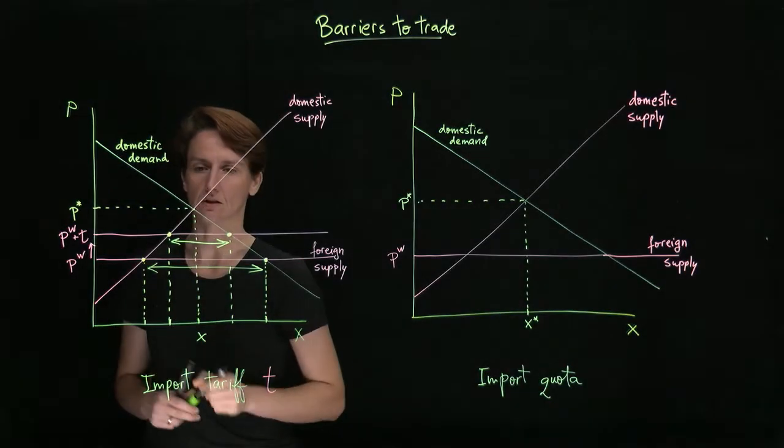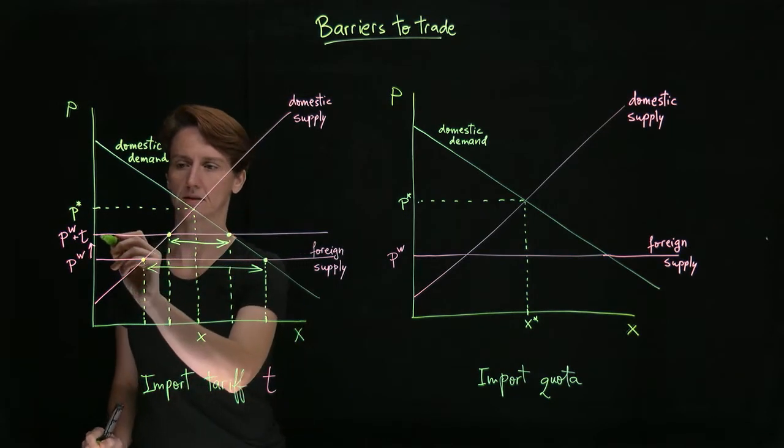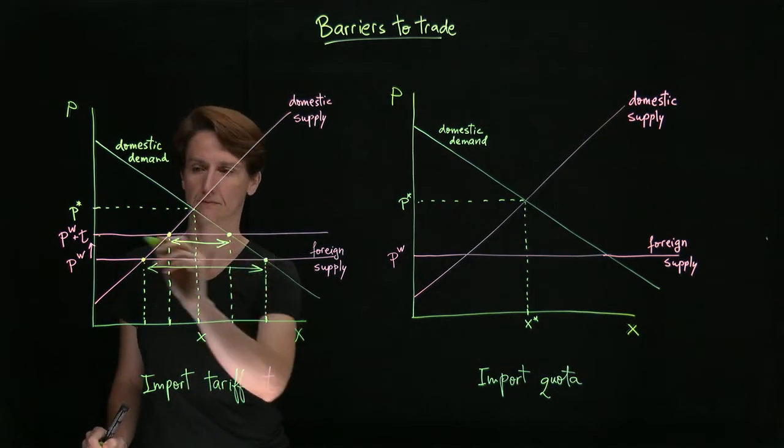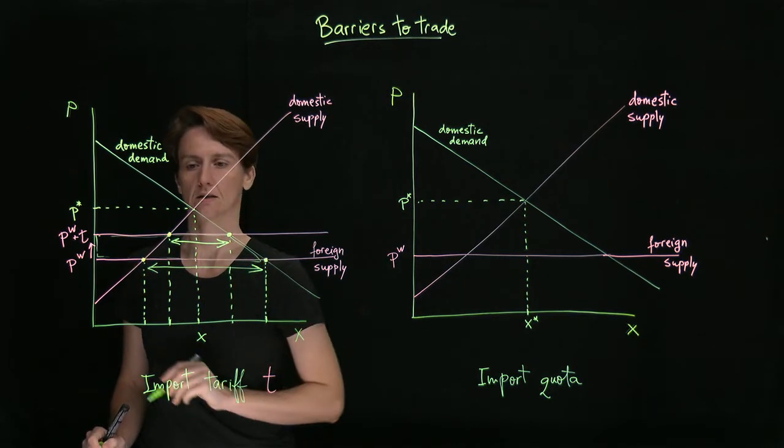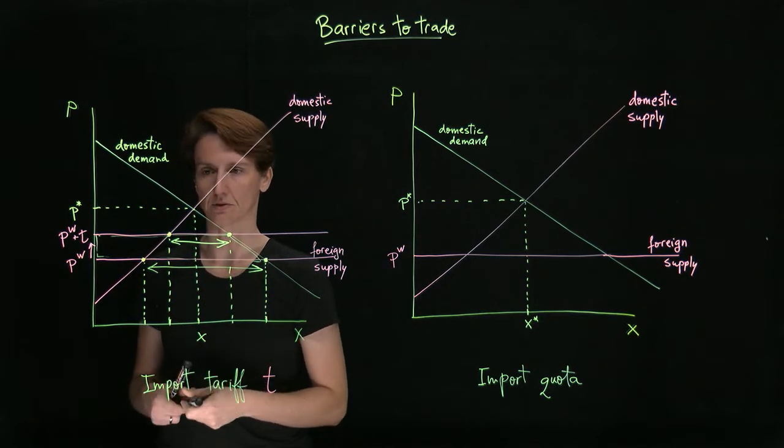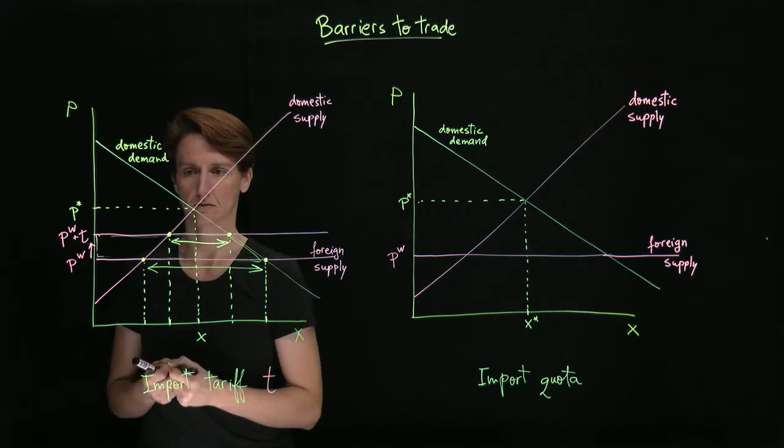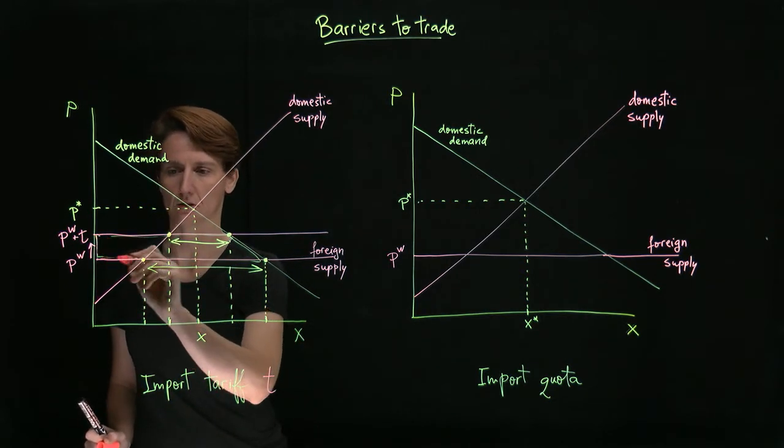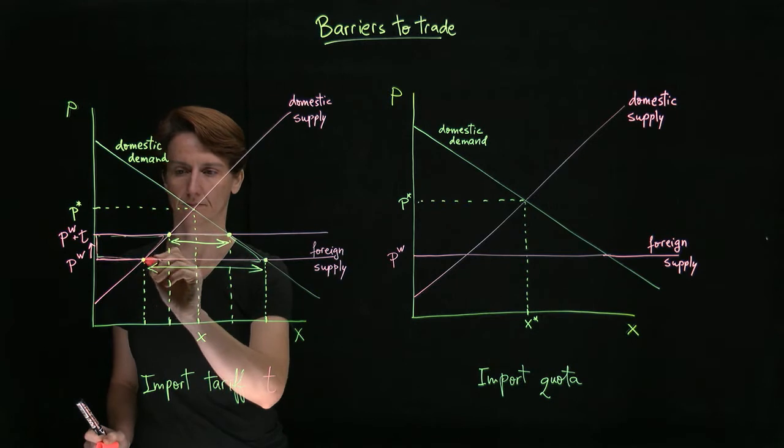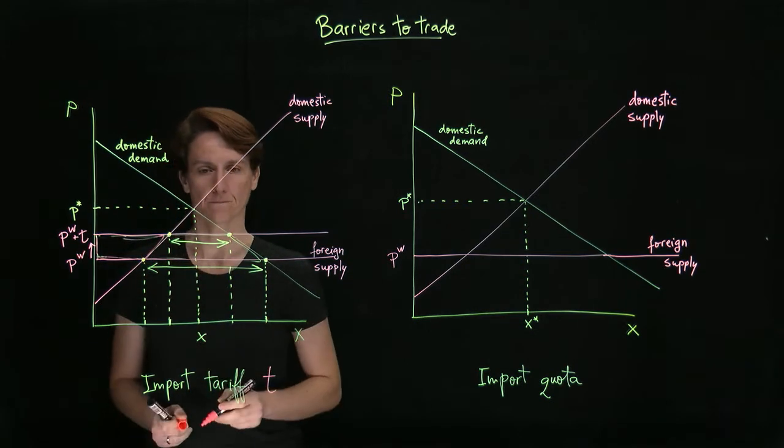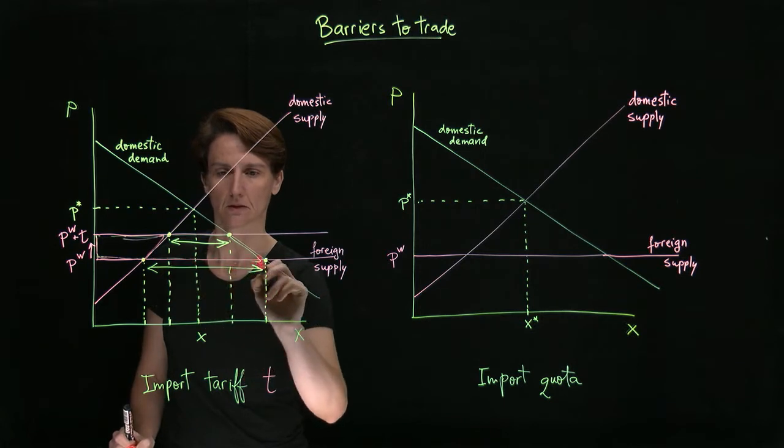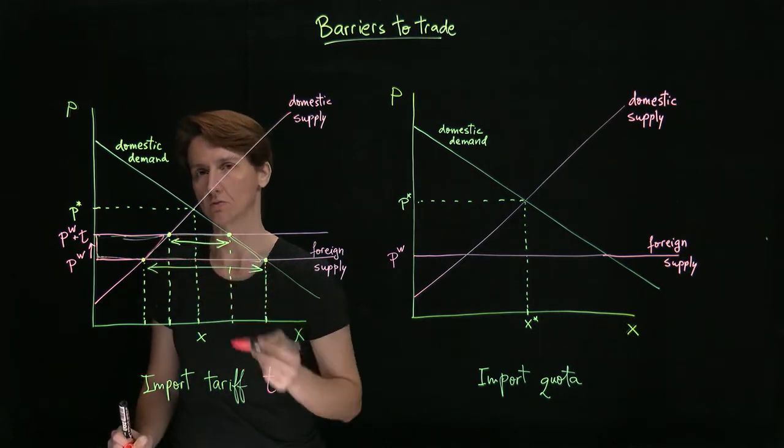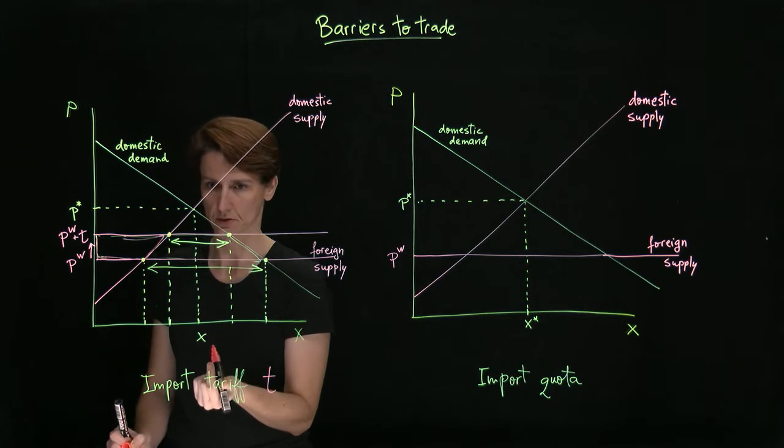Specifically, the loss in consumer surplus is this trapezoid. The gain in domestic producer surplus is this trapezoid. This area in the middle is lost to consumers but not recovered by producers.